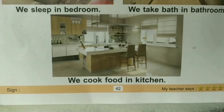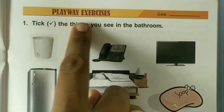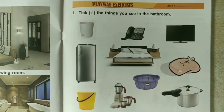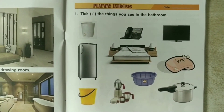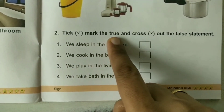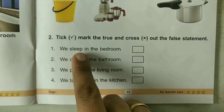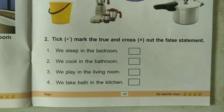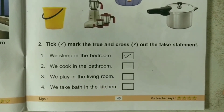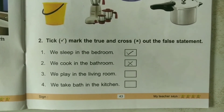On the next page 43, playway exercises are given. The first is: tick the things you see in the bathroom — a few things are given and you have to tick those found in the bathroom. The next is: tick mark the true and cross out the false statement. For example: 'We sleep in the bedroom' — true, so we tick mark. 'We cook in the bathroom' — false, so we cross it out. In the same way, you have to complete the exercises with the help of your parents.